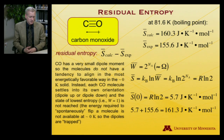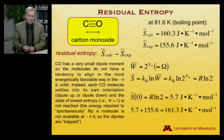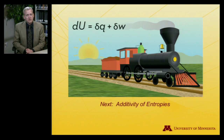Residual entropy nicely indicates that statistical molecular thermodynamics can be more accurate than a measurement, because the measurement requires reaching a perfect crystal as a starting point. That covers a lot of intuition about third-law entropies, as well as some interesting thinking about behavior near absolute zero. In the next video, we'll consider the additivity of entropies.